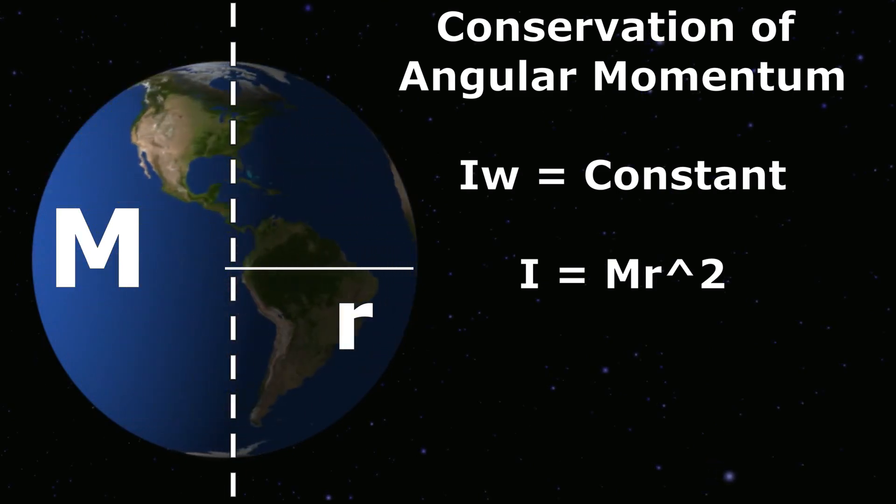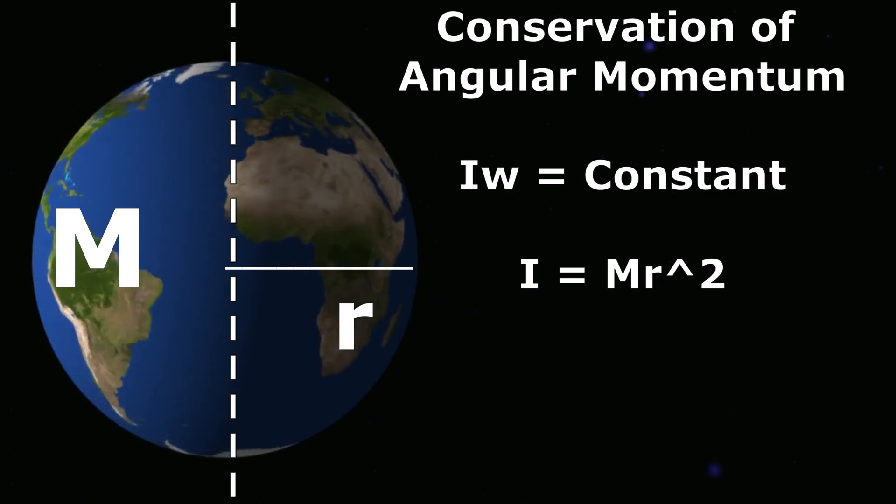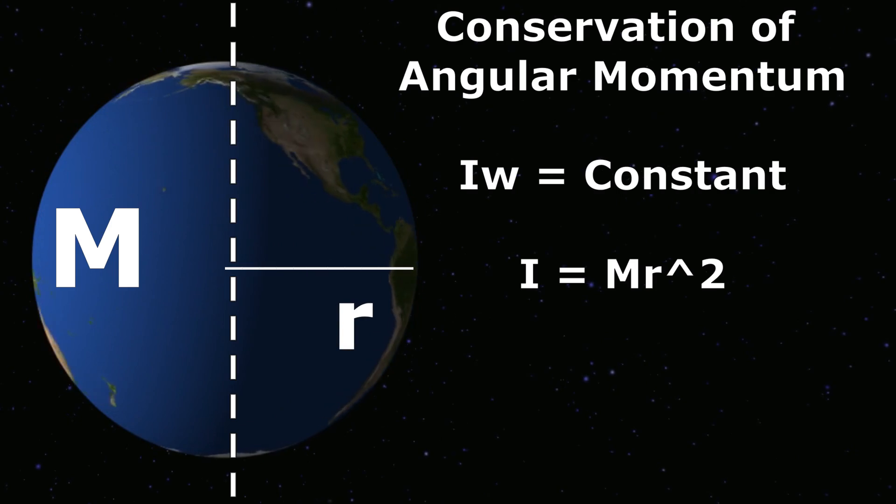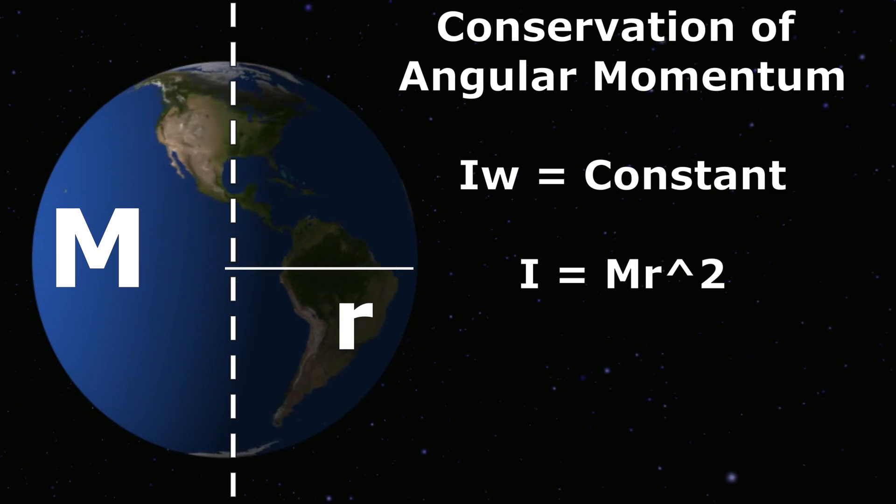But according to the conservation of angular momentum, product of I and omega must be constant. Here, I has decreased due to decrease in r. So, to keep the I omega constant, omega has to increase.